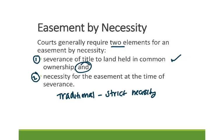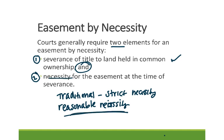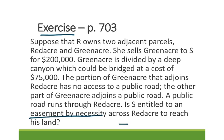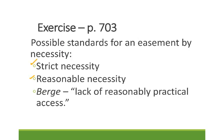If instead we use the reasonable necessity standard, which is what most courts use, the court would only require that the easement is beneficial or convenient for the use of the dominant parcel — not that it needs to be absolutely or strictly necessary. So S would likely be able to meet the necessity requirement if it's defined as reasonable necessity, because S is unable to enjoy half of the land without constructing an expensive bridge.